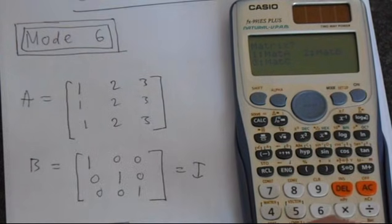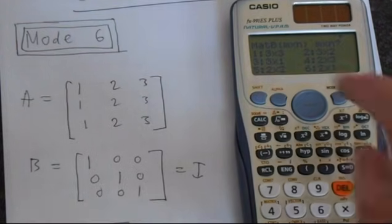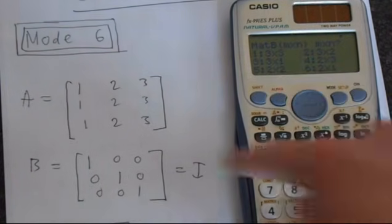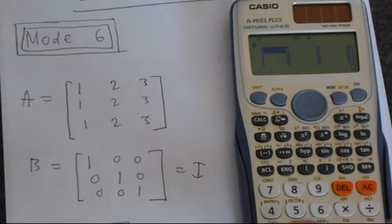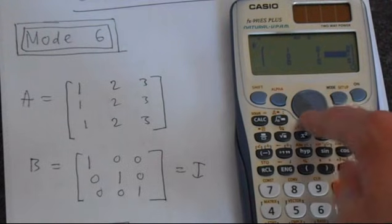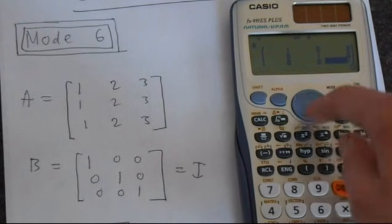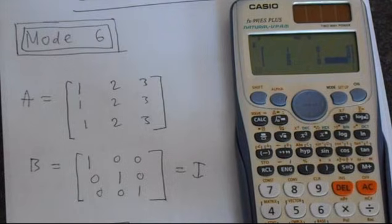So we're going to enter matrix B. So we press 2. This is a 3 by 3 again, and this is just the identity matrix. So we add 1s on the diagonal. And you can move around in the matrix using the arrow buttons, which is not at all surprising.